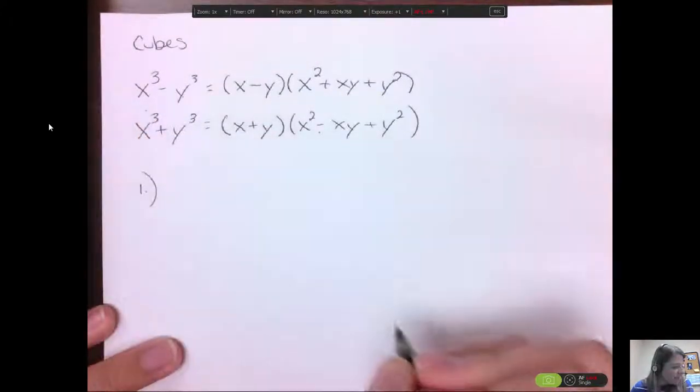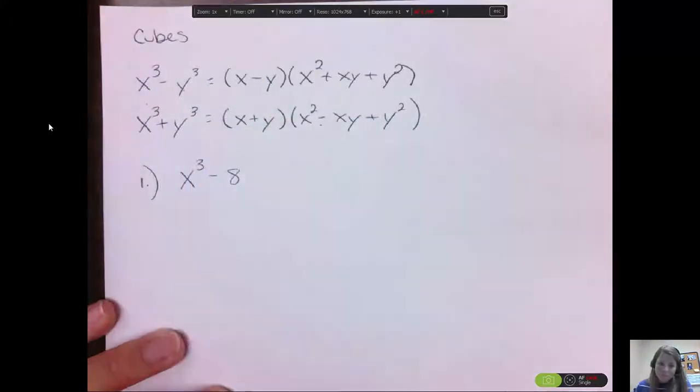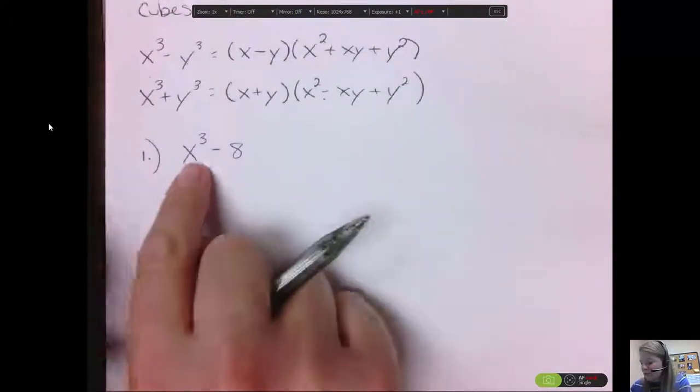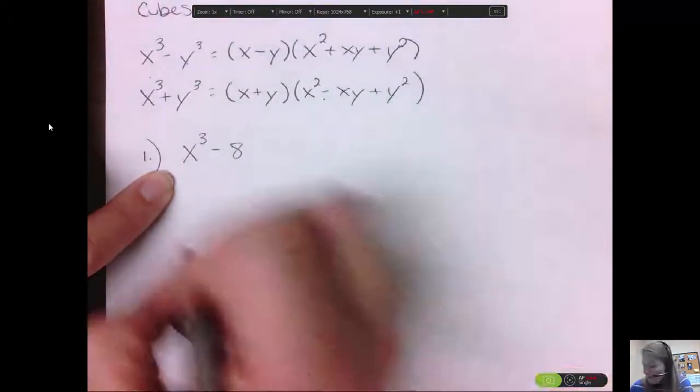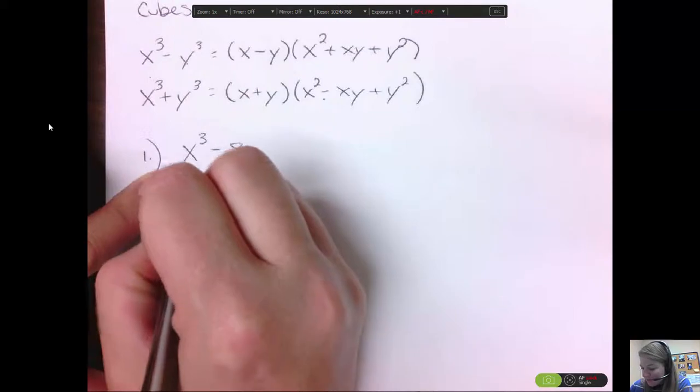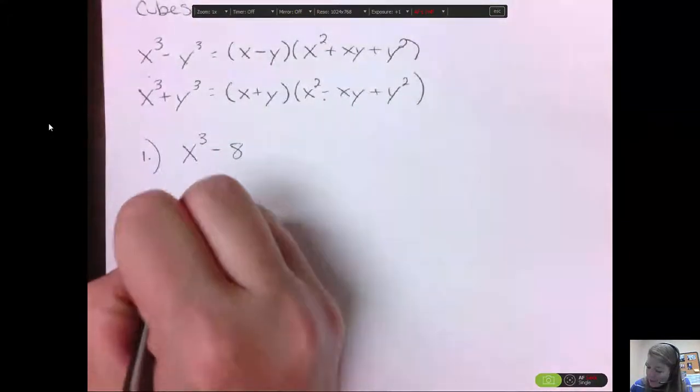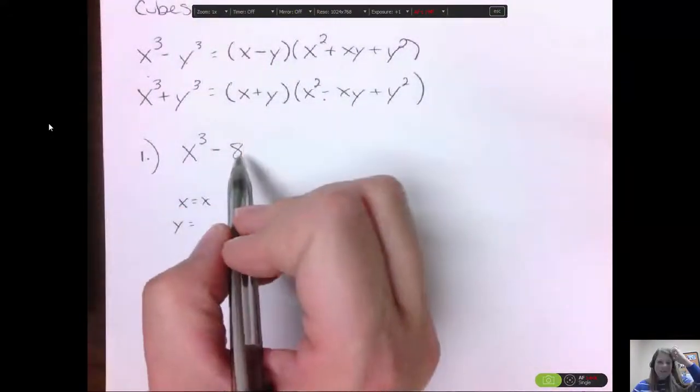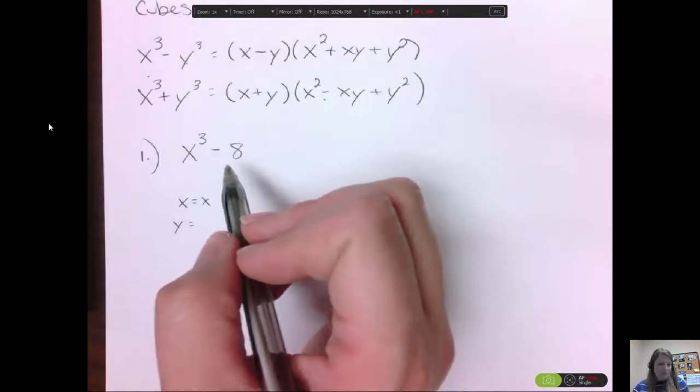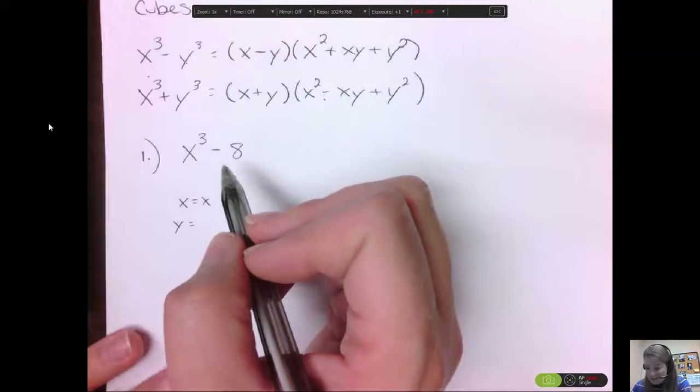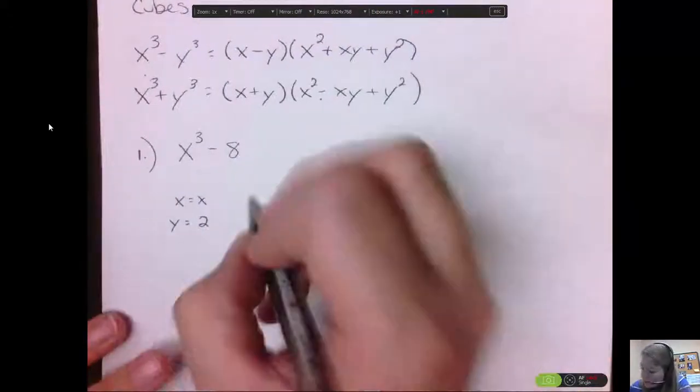So when we see the problems, it's going to be something like, I'll start with something easy, x to the third minus 8. So what I tell people is look at the first term. What is the cubed root of x to the third? Well, it's going to be x. So on our formula, x would just be x, which is common. And what would y equal for our formula? What's the third root of 8? Well, 2 times 2 times 2 is 8, or 2 to the third is 8. So 2 is our third root, or our y. Then all I do is put them into the formula.